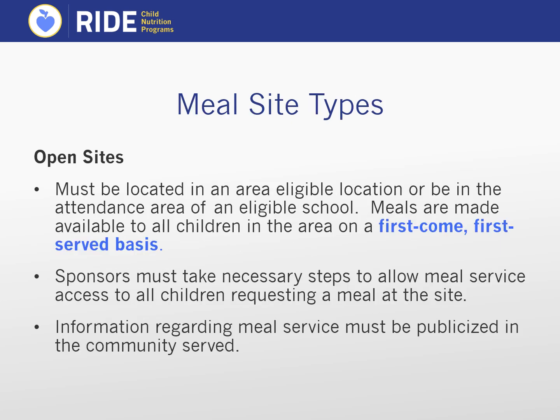Within the SFSP there are multiple types of summer meal sites: open, closed or enrolled, and camp. Open sites must qualify based on one of the area eligibility methods. At an open site, meals are given to qualifying children on a first-come, first-served basis. Participants do not need to prove residence within the community and attendance does not need to be recorded, but all participants must be 18 or under. As a sponsor, you must allow access to the largest extent possible and eliminate any barriers to participation, which may include physical barriers, allergies, disabilities, and language barriers.